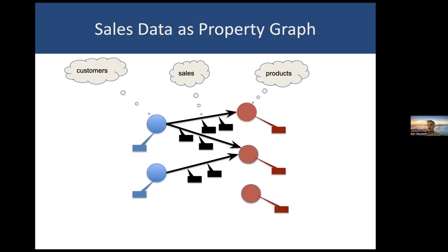If I take now the cumulative information on the sales, I will end up with a graph such as the one you see here. It's a bipartite graph connecting the blue nodes, which stand for customers, to the red nodes, which stand for products.